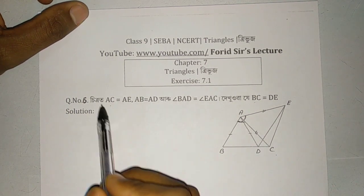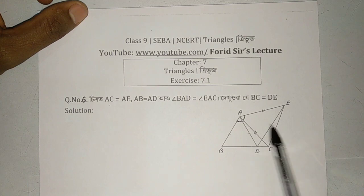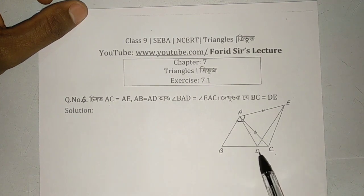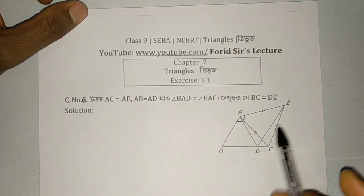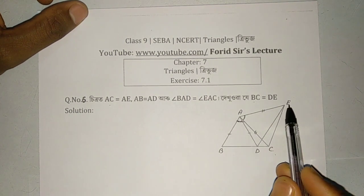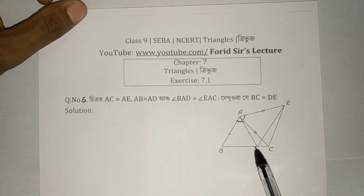Looking at our diagram, we can see that AC equals AE — that is given. And AB equals AD — that is also given.